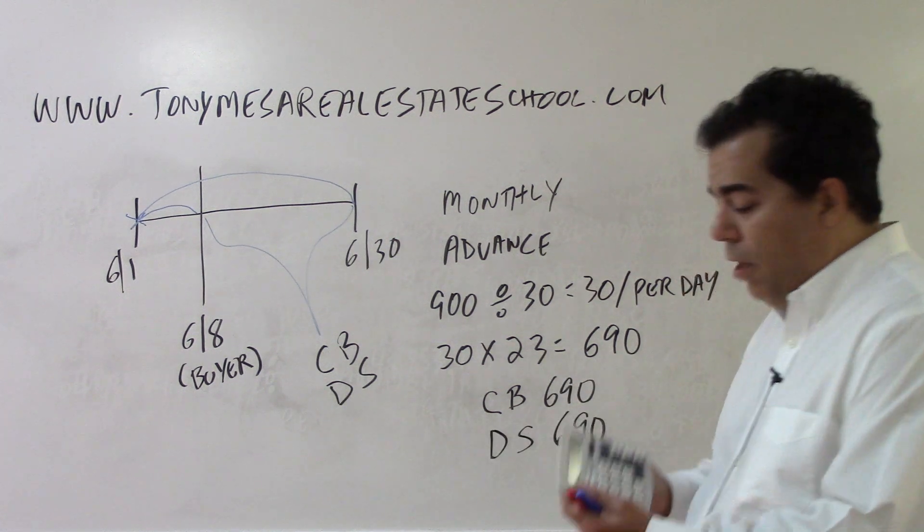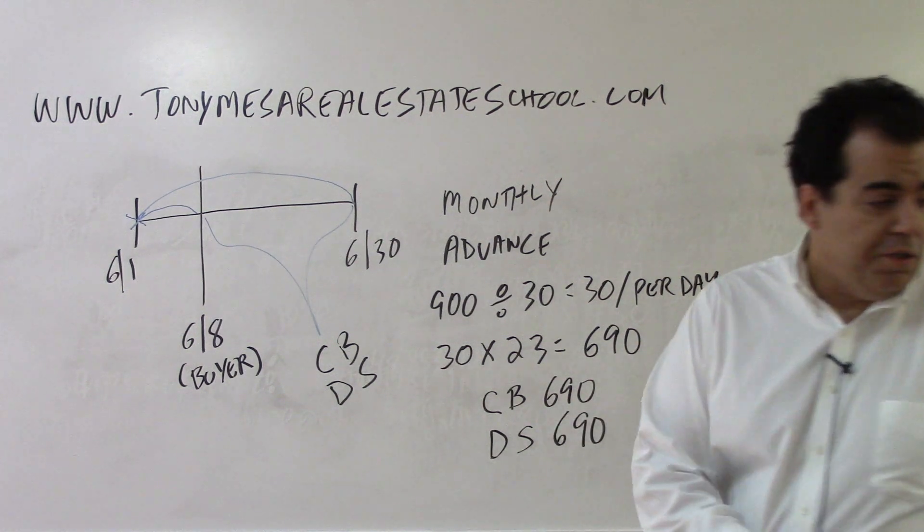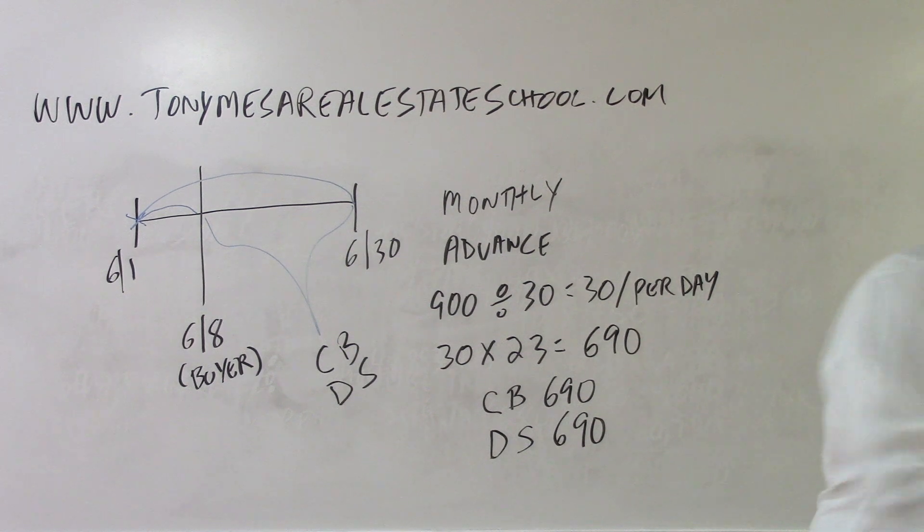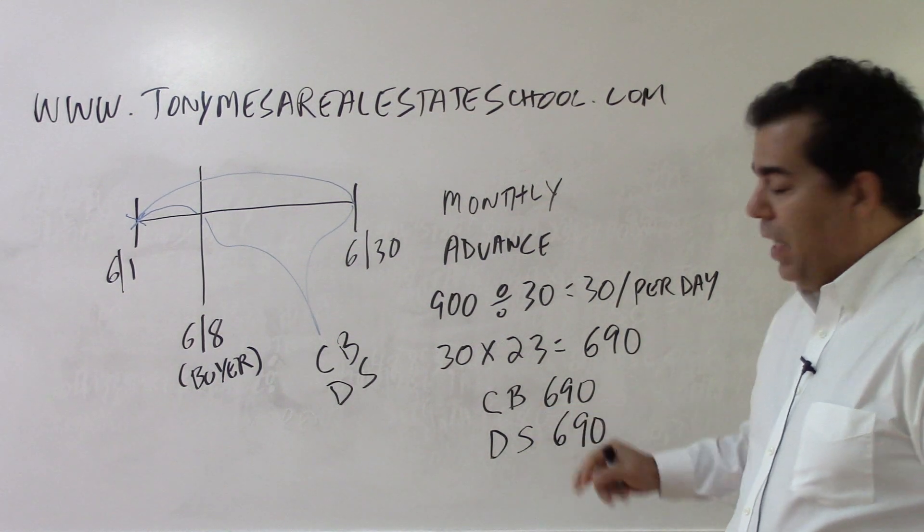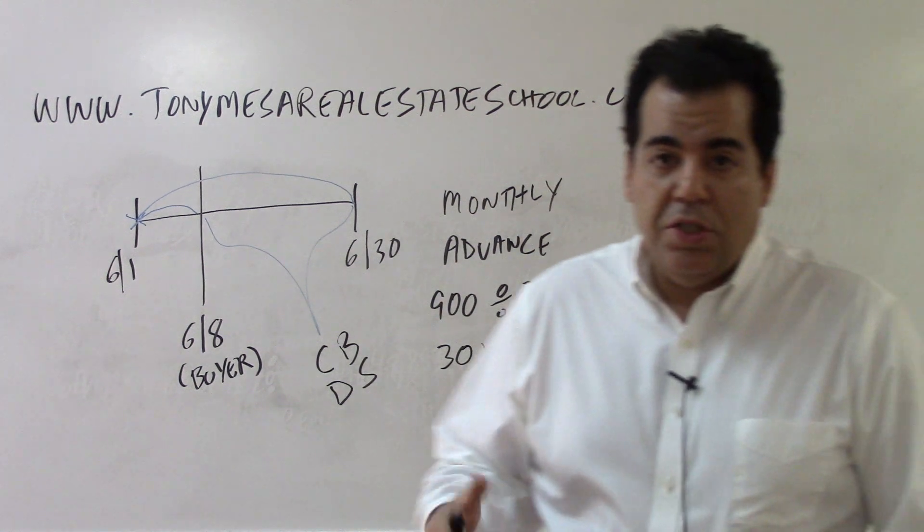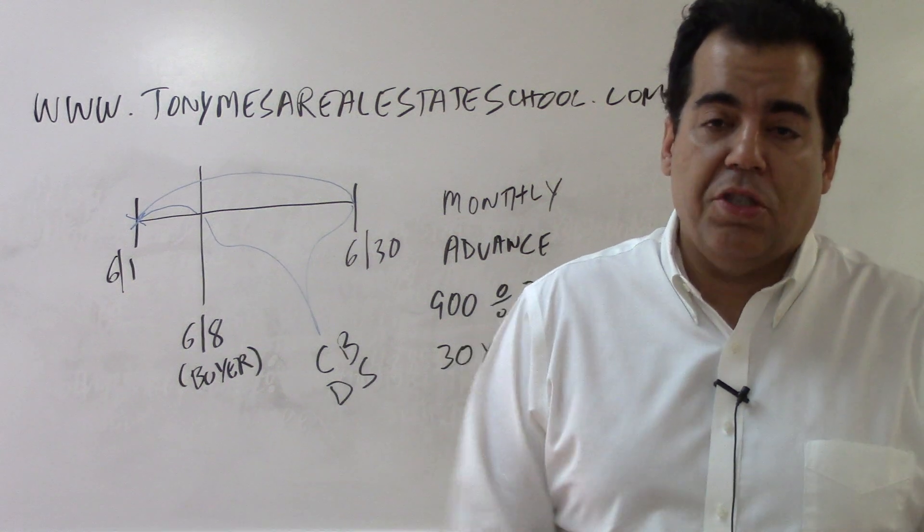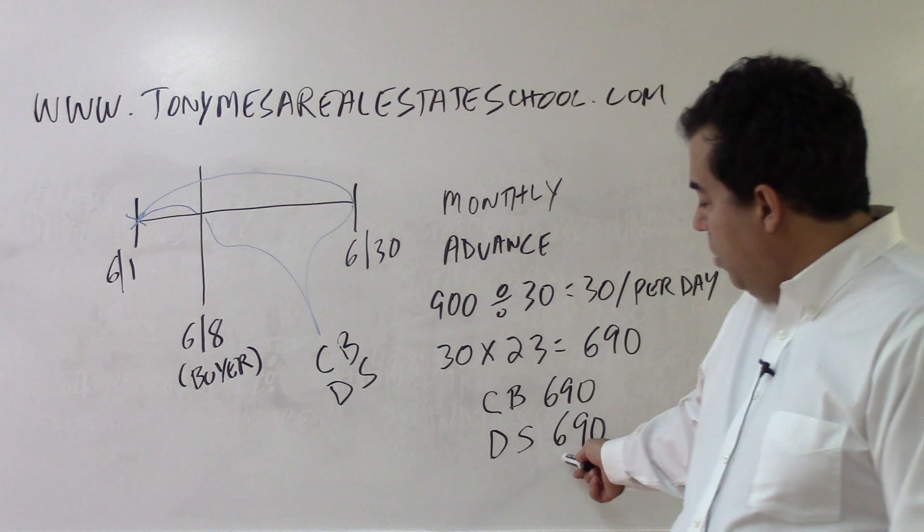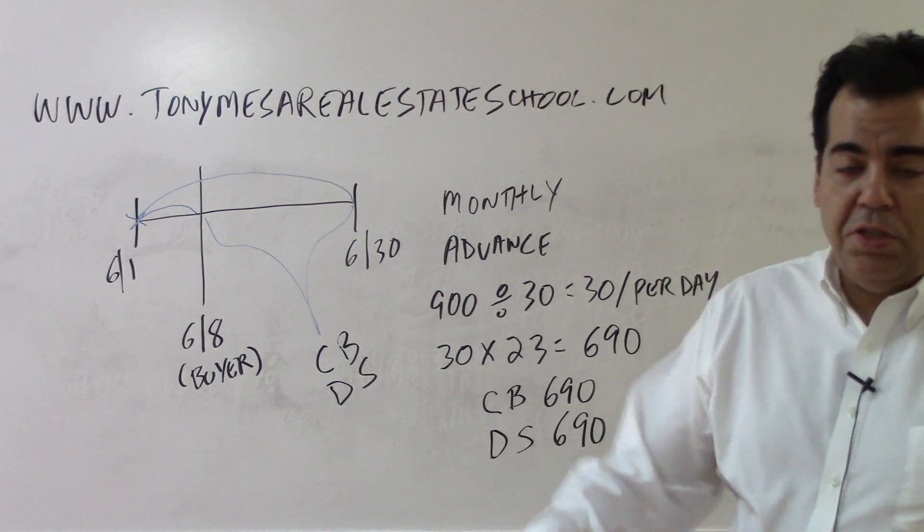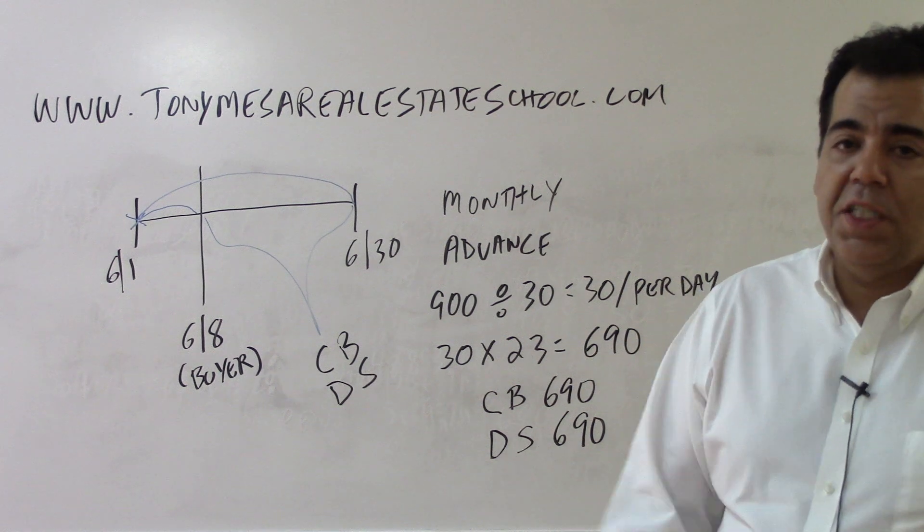What does that mean, that we are crediting the buyer $690 and we are debiting the seller $690? Crediting the buyer $690 means the buyer is going to bring to the closing $690 less. That's just like them getting a check for $690. You can bring that much less to the closing. Debiting the seller $690 means we're reducing the seller's proceeds from the closing by $690.